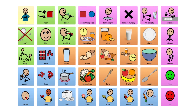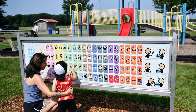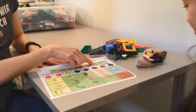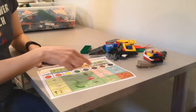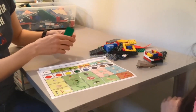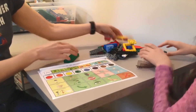A typical approach to support autistic children during speech-language therapy and special education is to provide communication boards with vocabulary symbols relevant to a specific topic. Professionals use these boards in activities that immerse learners in symbolic language, such as demonstrating how to select symbols to talk about real-world concepts.